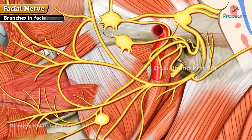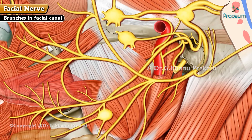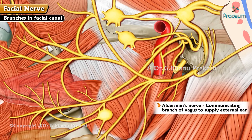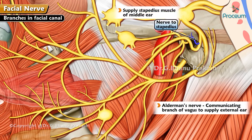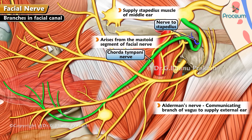Branches of the facial nerve in the facial canal: Alderman's nerve is the communicating branch of the vagus to supply the external ear. The nerve to stapedius supplies the stapedius muscle of the middle ear. The chorda tympani nerve arises from the mastoid segment of the facial nerve.